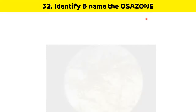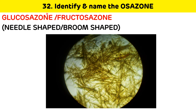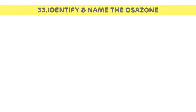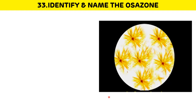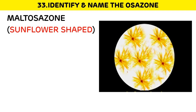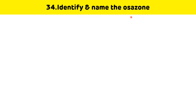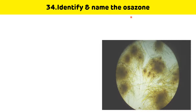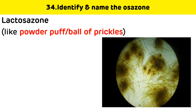Identify and name the osazone. These are needle- or broom-shaped crystals — this is glucose osazone or fructose osazone. These are sunflower-shaped osazone crystals — this is maltose osazone. These are powder-puff shaped osazone crystals — this is lactose osazone.